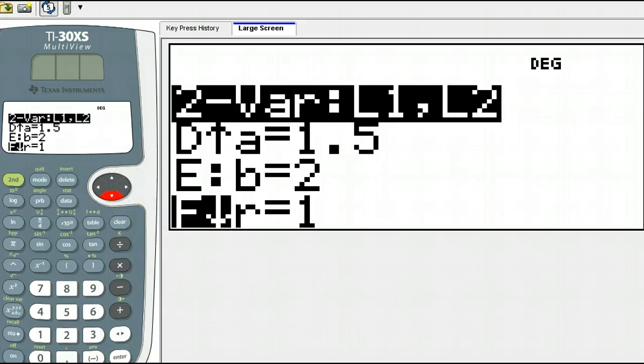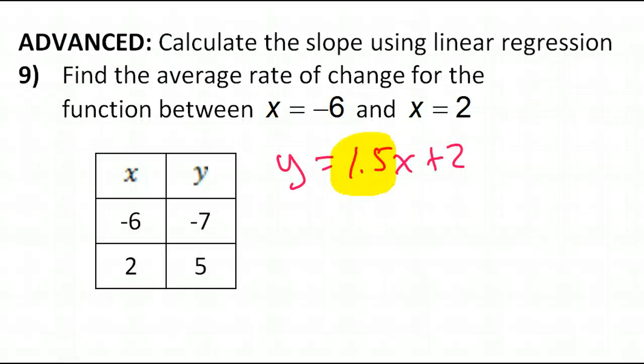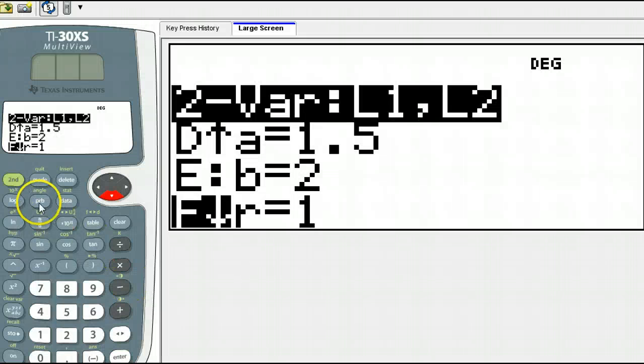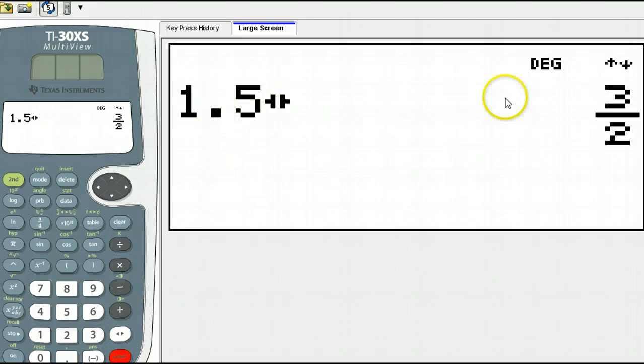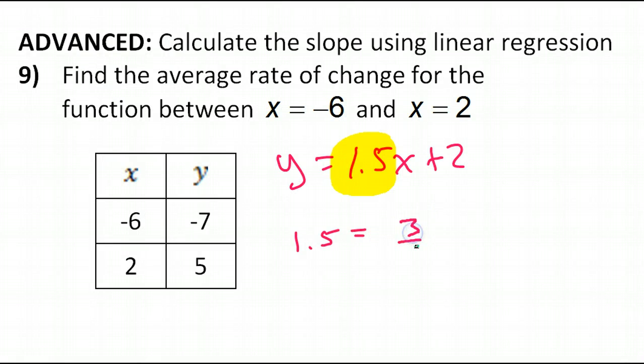Now, one more thing. If I want to write this as a fraction, because that's usually what we want. So right now we know that the rate of change is 1.5. But what is 1.5 as a fraction? Let's just quit out of here. You know that if you need to, you can use the toggle key to change a decimal to a fraction. So we've got 3 over 2. So 3 over 2 is the rate of change.